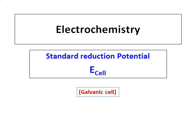Continuing with electrochemistry, we will learn a new term called the standard reduction potential, and using that we will learn how to calculate the E cell, or electrode potential, for a cell.